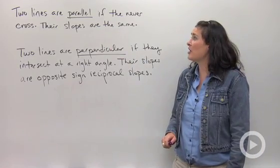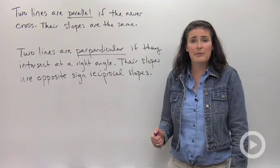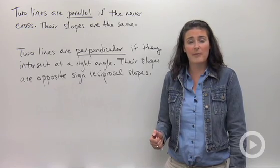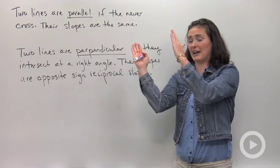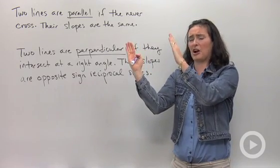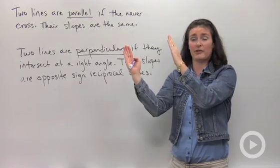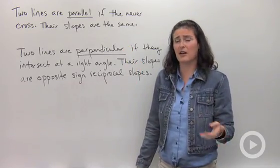First thing, two lines are parallel if they never cross. Their slopes are the same. A lot of people think of railroad tracks when they think about parallel lines. They're always parallel, never crossing, going on forever across the land. That's the idea of parallel lines.